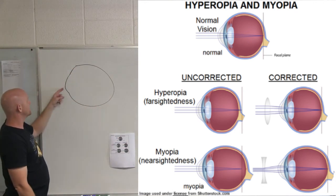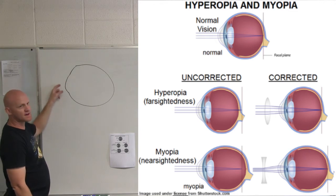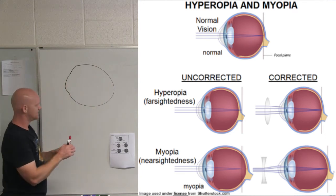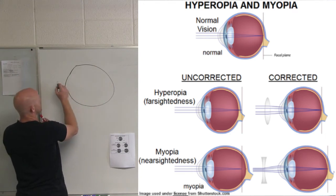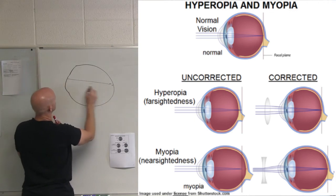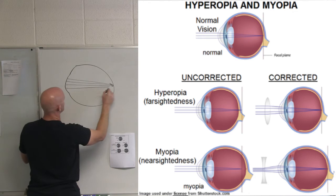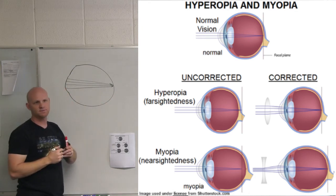So you've got your cornea on this side and your pupil, and light is going to pass through your cornea, pass through the pupil, pass through the lens, and hopefully all your light rays that come in will converge right on your retina and form an image.